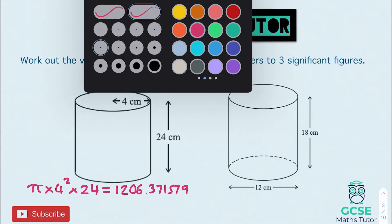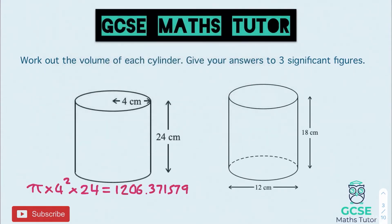We're giving our answer to three significant figures. So we have 1206 point something — taking the first three significant figures gives us 120, chop it after the zero, and we have a final answer to the nearest ten of 1210 centimetres cubed. There's our final answer for the first cylinder.